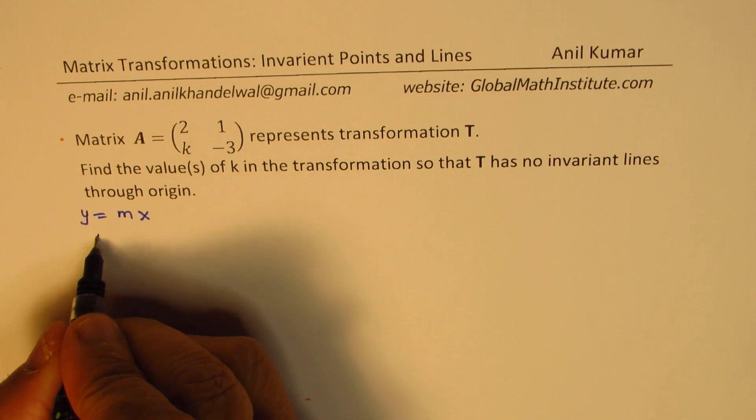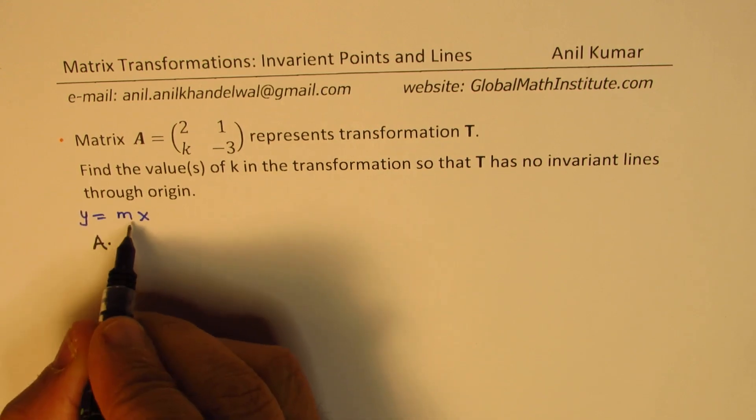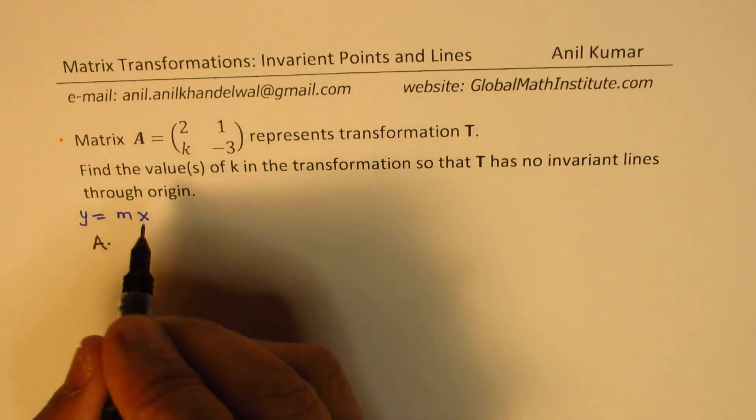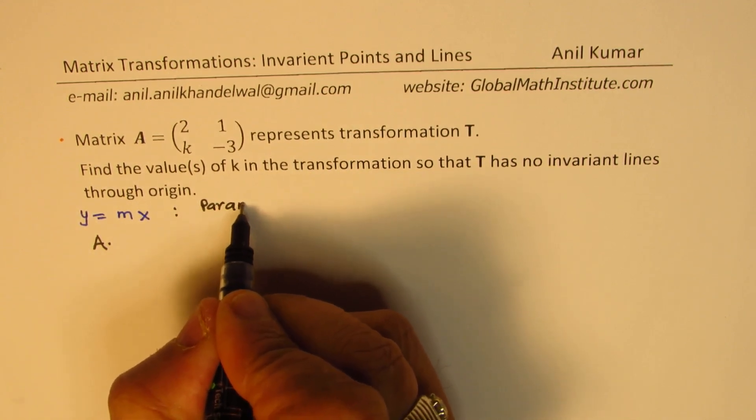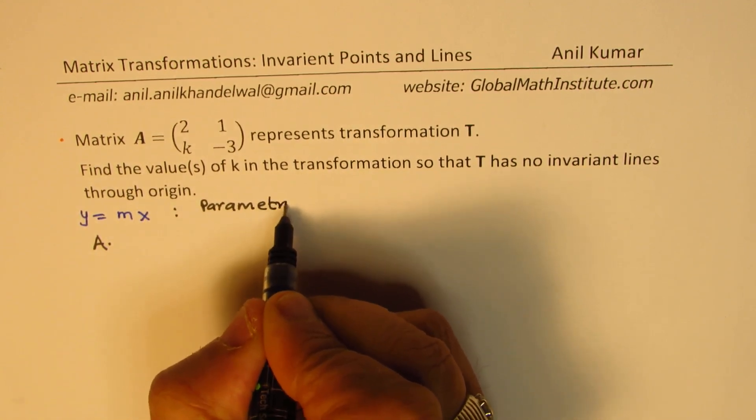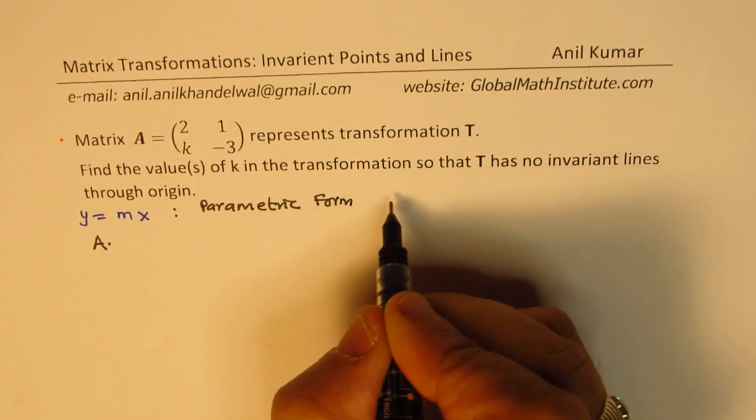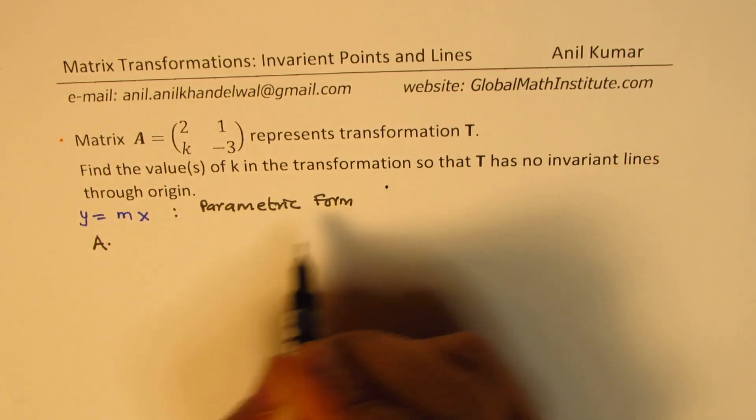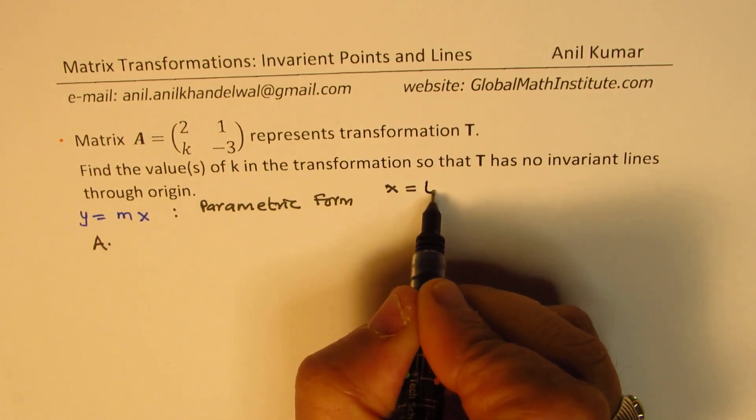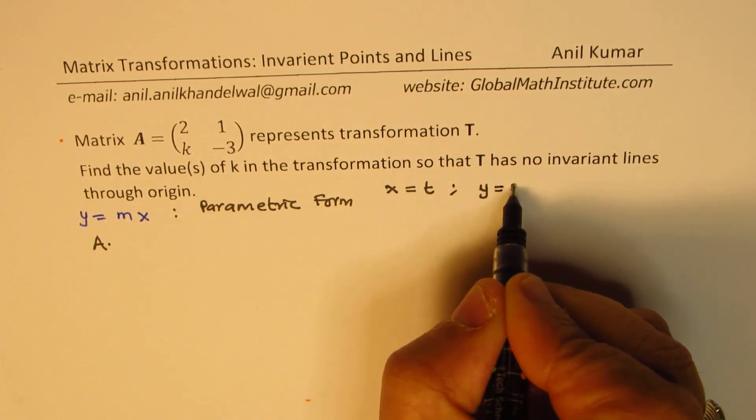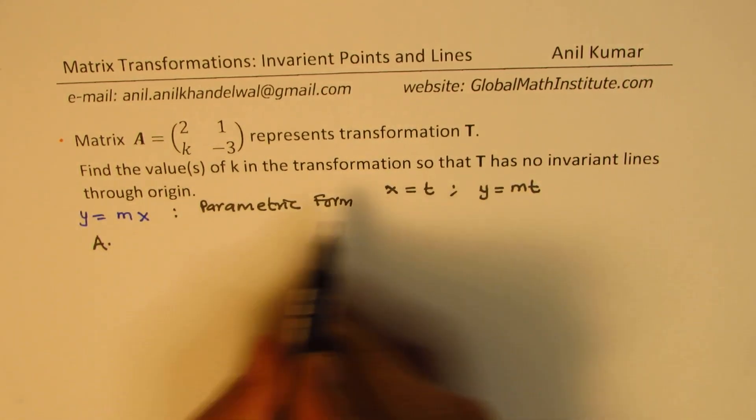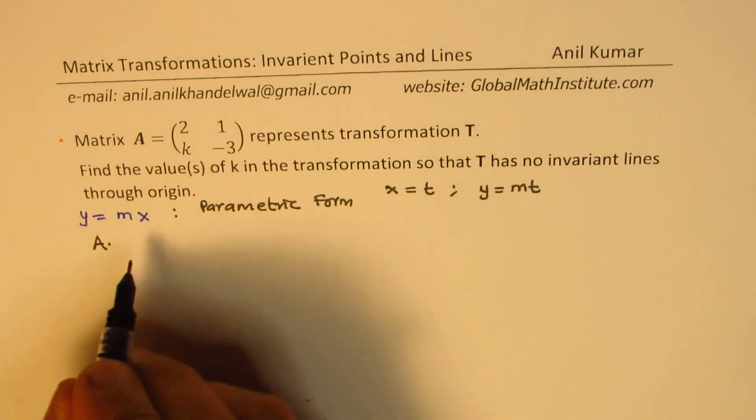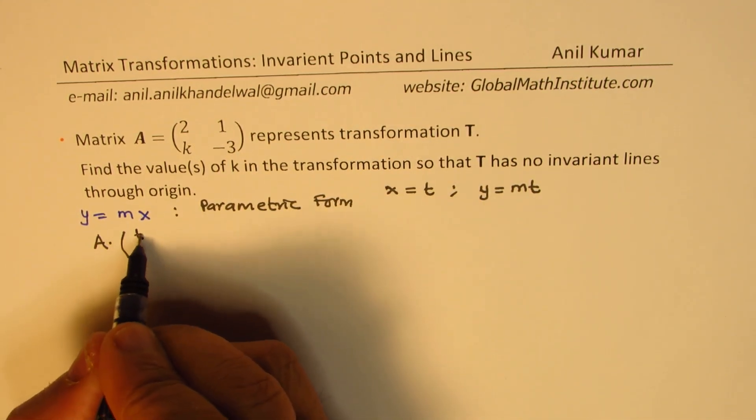So if I have the transformation A on any line which is going through the origin, I could actually write this in parametric form. So this equation in parametric form can be written as: if we write x equals t, then y equals mt. So that becomes the equation in parametric form. So we are going to apply this transformation on the parametric form of the equation.